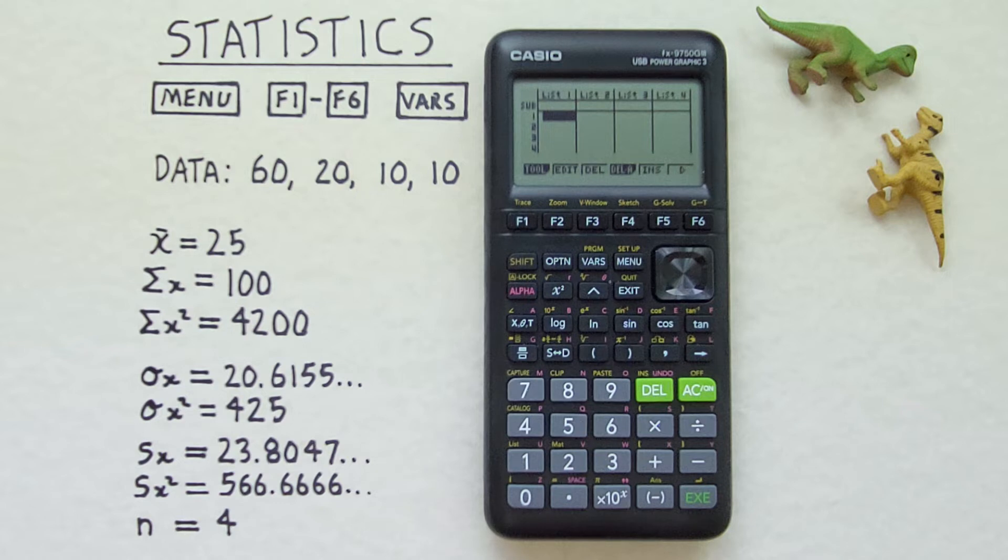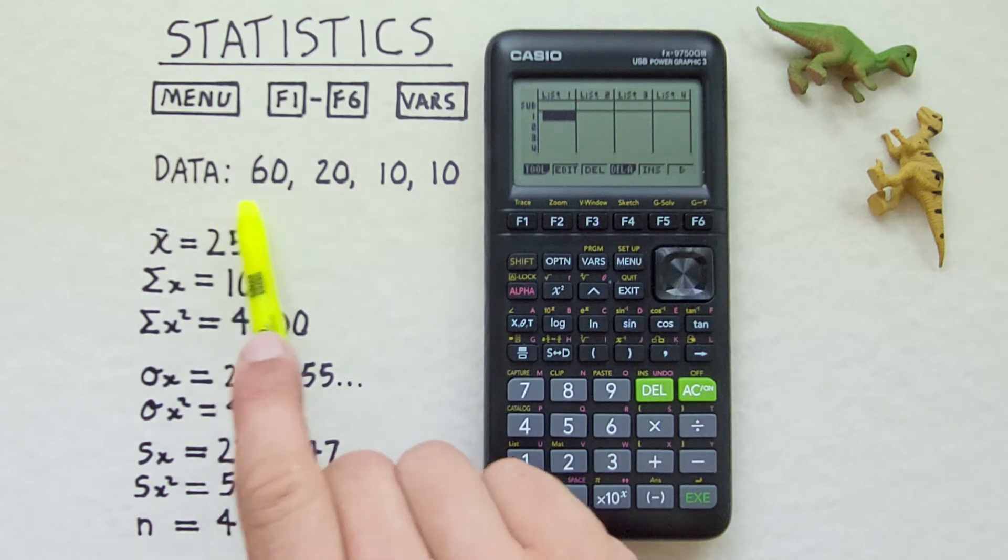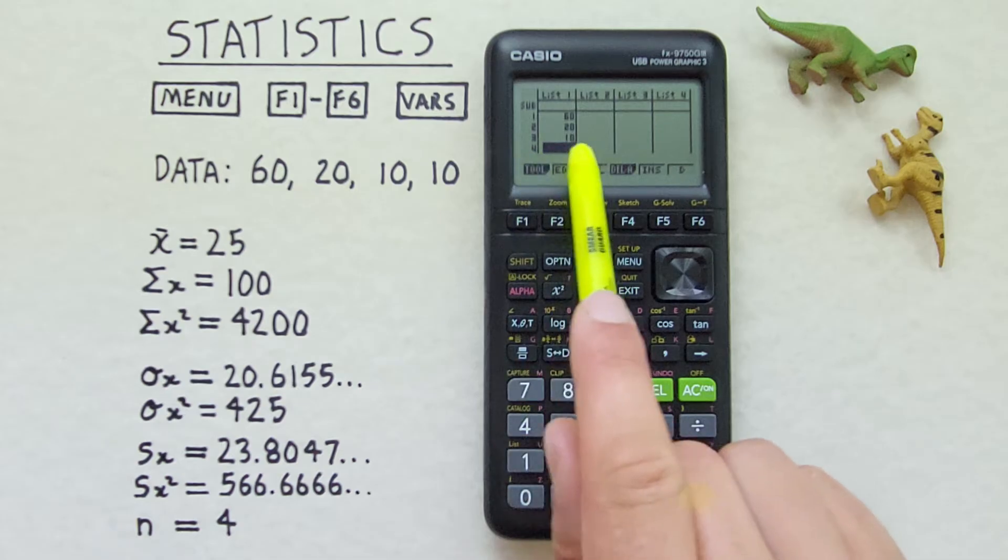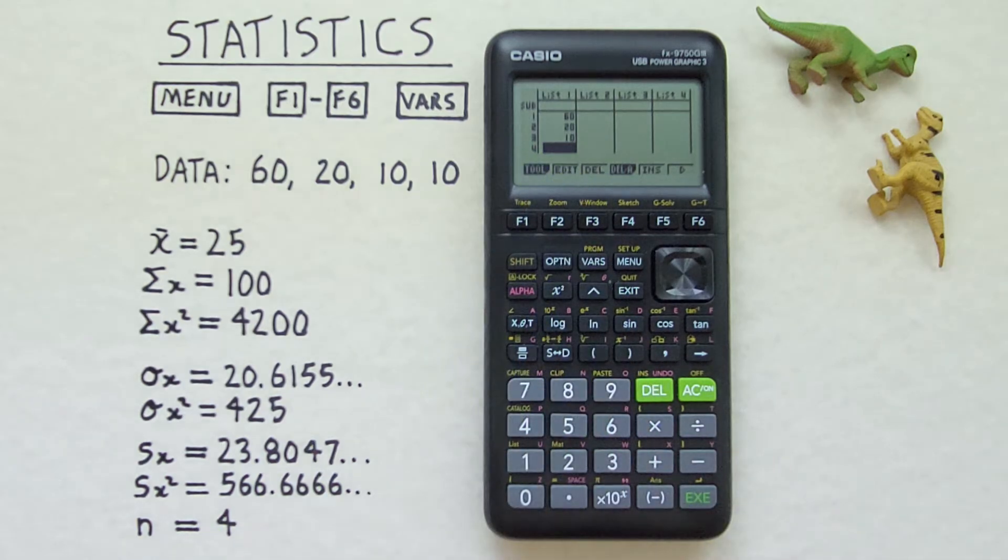Let's enter our data now using the frequency option. So now we want to enter each unique piece of data. So we have 60. Enter. 20. Enter. 10. Enter. And since we have another 10 but we've already entered 10 once that's all we need to do. We've entered each unique piece of data.